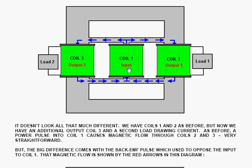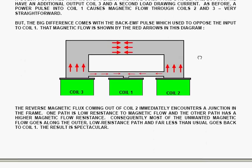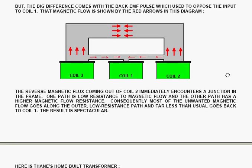As before, we put a power pulse into coil 1, and that causes a magnetic flow, this time in two directions through both of the output coils. And that powers both of the loads through voltage generated in coil 2 and coil 3. But the big difference comes with the back EMF pulse which used to oppose the input to coil 1. That magnetic flow is shown by the red arrows in this diagram. The reverse magnetic flux coming out of coil 2 immediately encounters a junction. Consequently, most of the unwanted magnetic reverse EMF magnetic flow goes along the outer low flow resistance path.